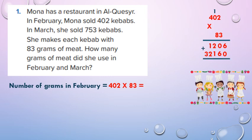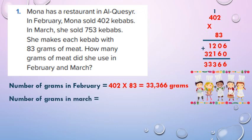Then add the 2 products: 6 plus 0 equals 6, 0 plus 6 equals 6, 2 plus 1 equals 3, 1 plus 2 equals 3, and lastly 3. So, number of grams of meat in February: 33,366 grams.